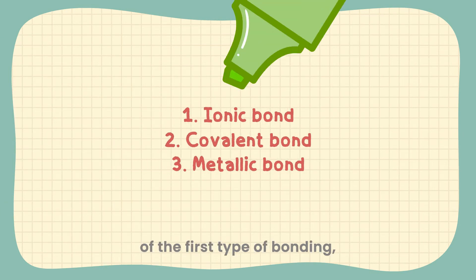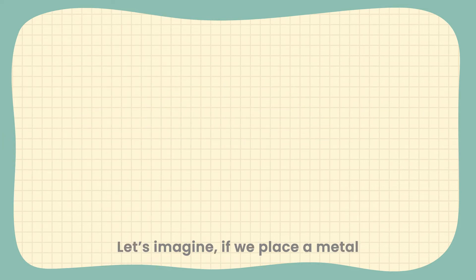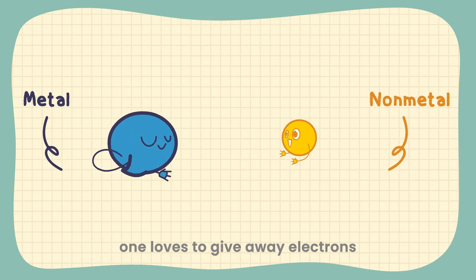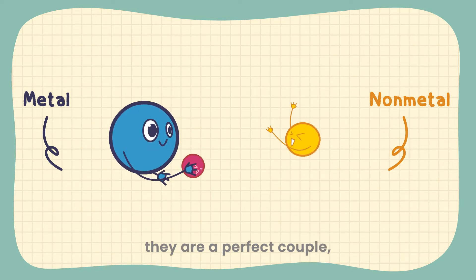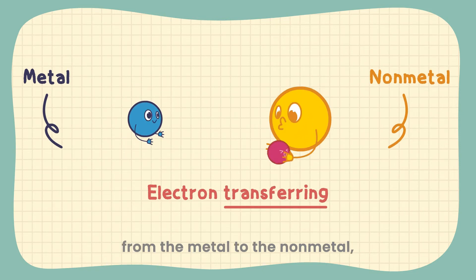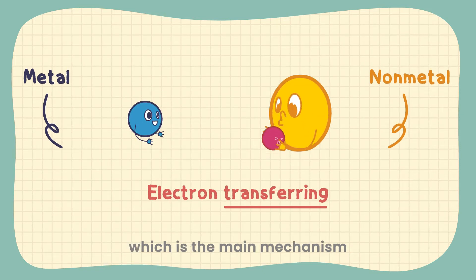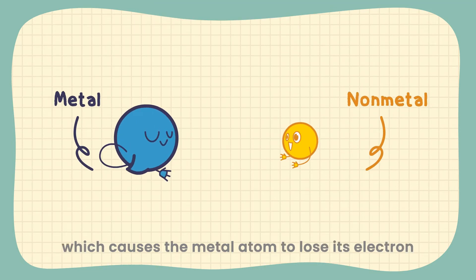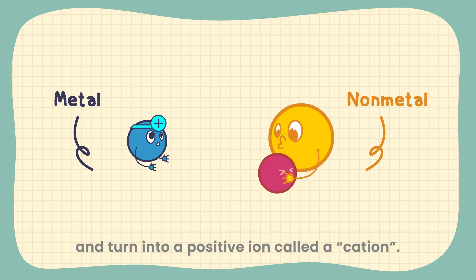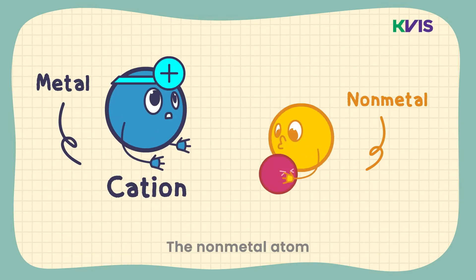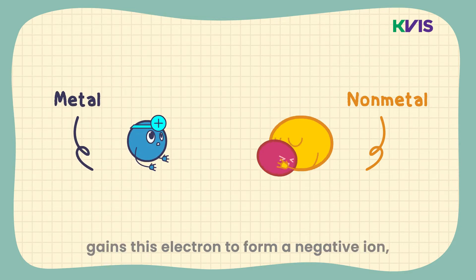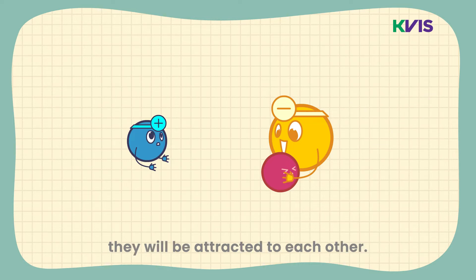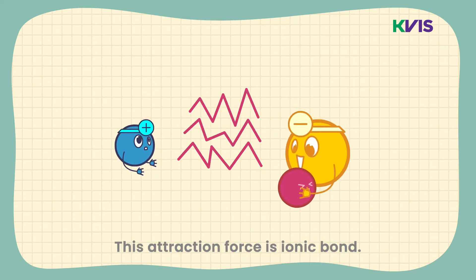We will now go into details of the first type of bonding, which is ionic bonding. If we place a metal and a non-metal together — one loves to give away electrons, and the other loves to draw electrons — they are a perfect couple. This causes electron transfer from the metal to the non-metal, which is the main mechanism behind ionic bond formation. This occurs because of the big difference in EN values, which causes the metal atom to lose its electron and turn into a positive ion called a cation. The non-metal atom gains this electron to form a negative ion called an anion. When the cation and anion stay close together, they will be attracted to each other. This attraction force is the ionic bond.